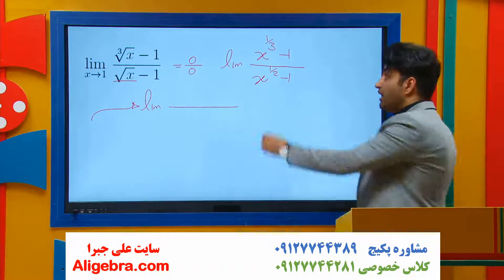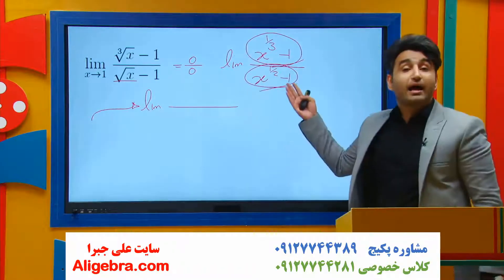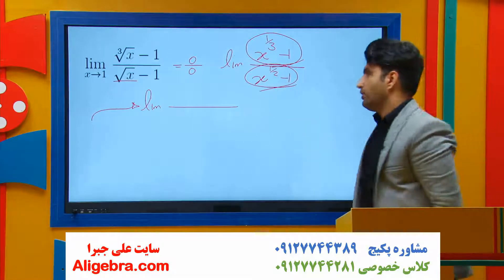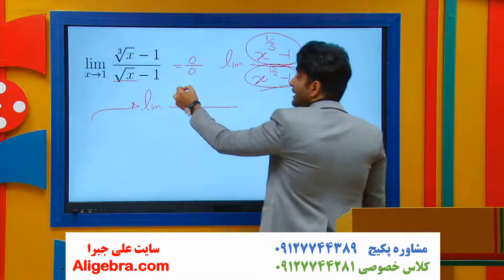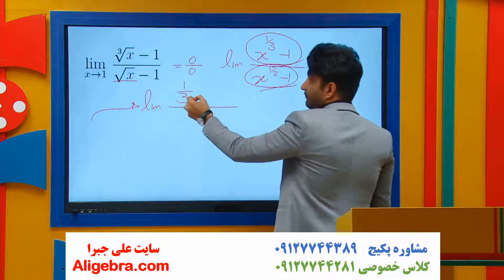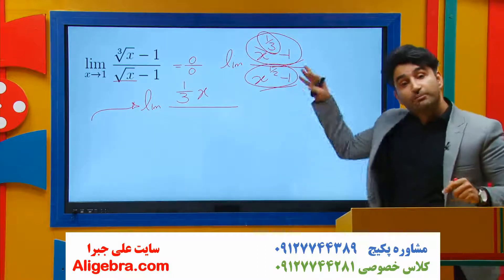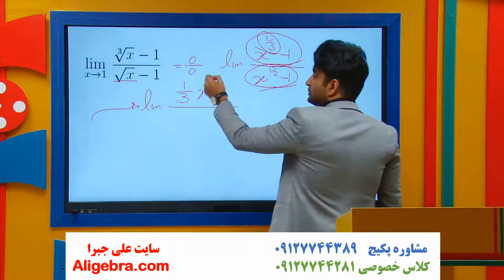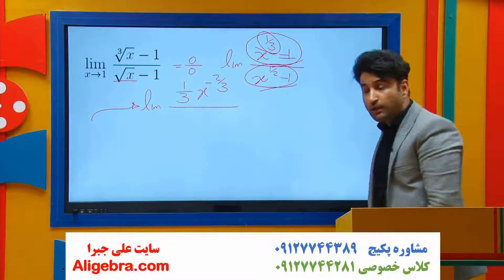Now take derivative of top and bottom of the fraction when you have a rational exponent. On top, the derivative of x to the 1 over 3, take the exponent in front and take away 1 from the exponent, which gives me x to the minus 2 over 3. The derivative of minus 1 is 0.